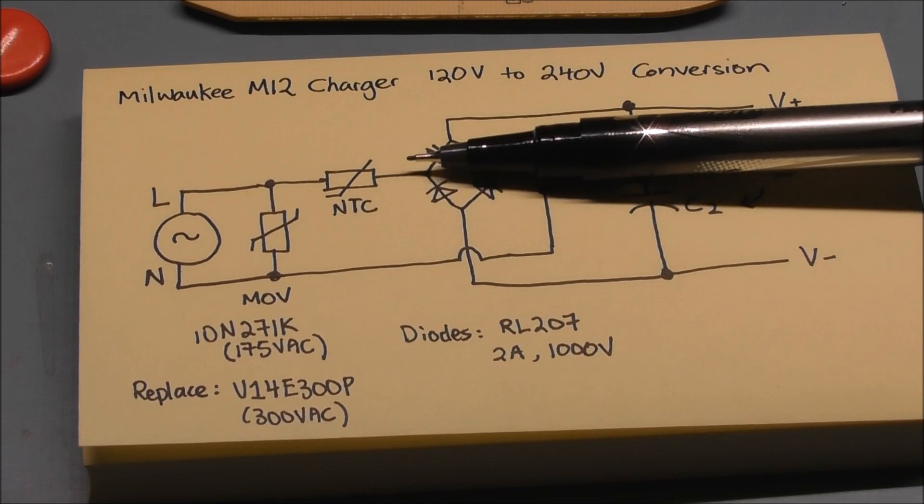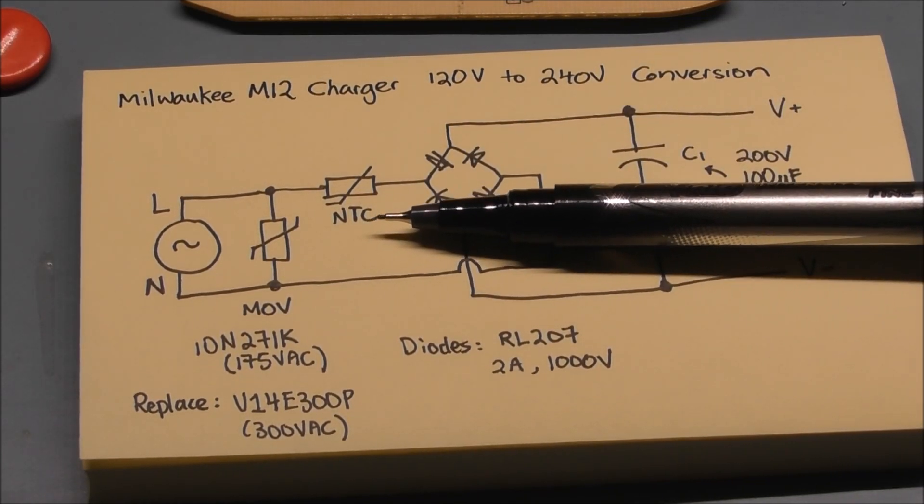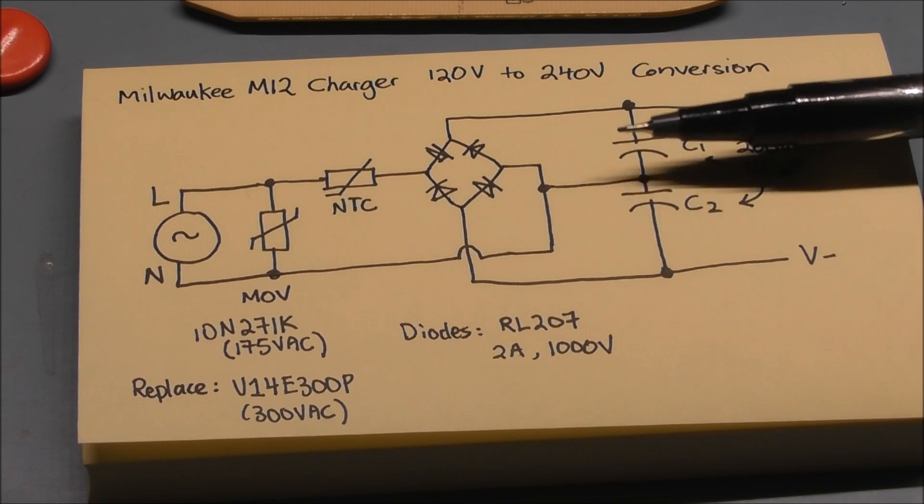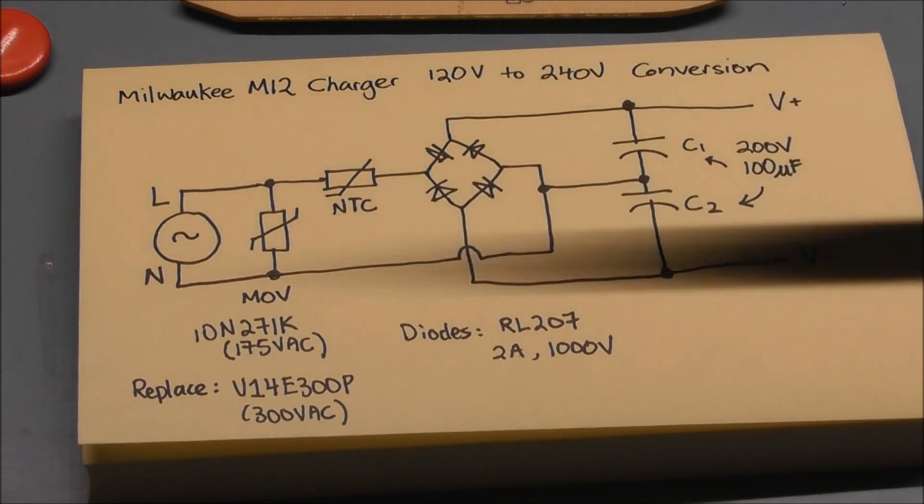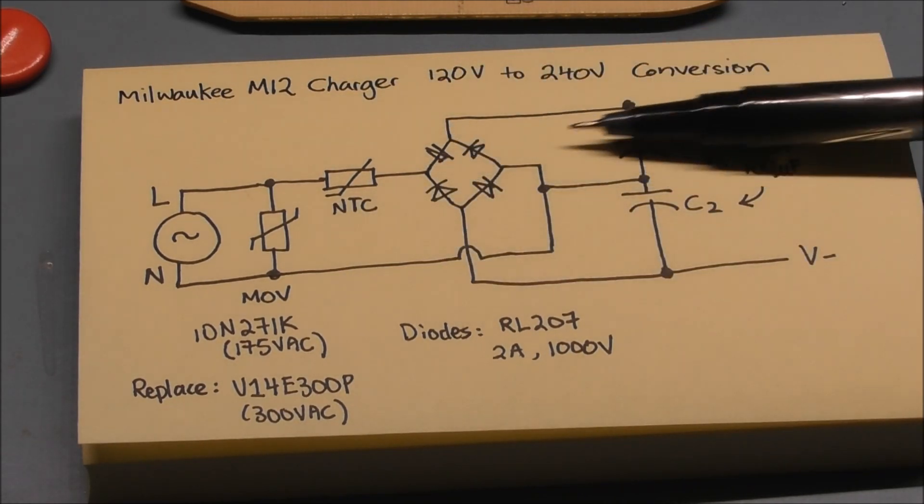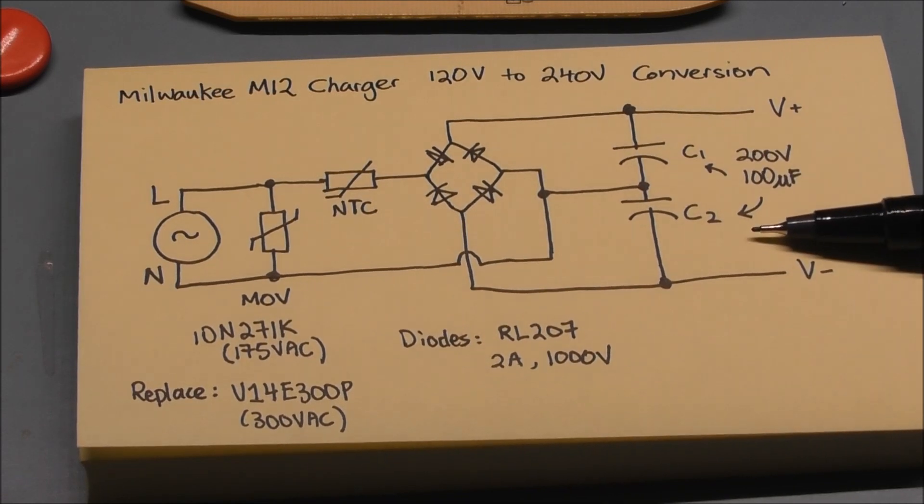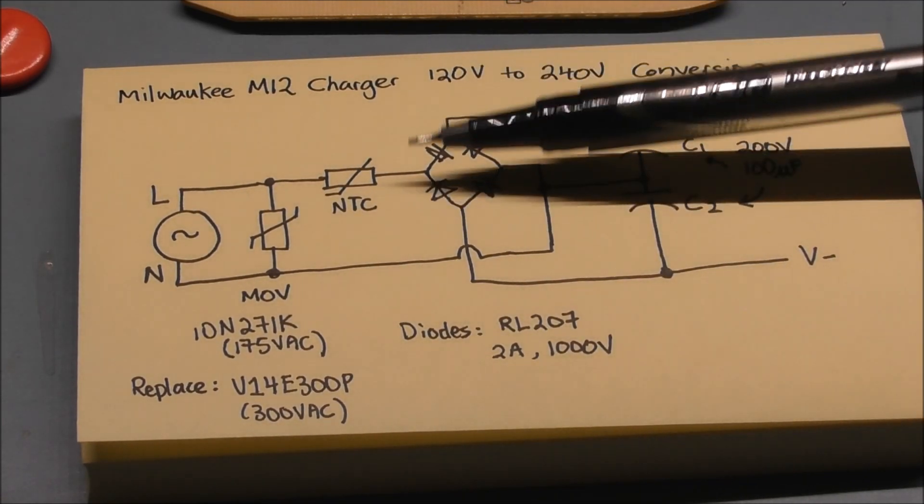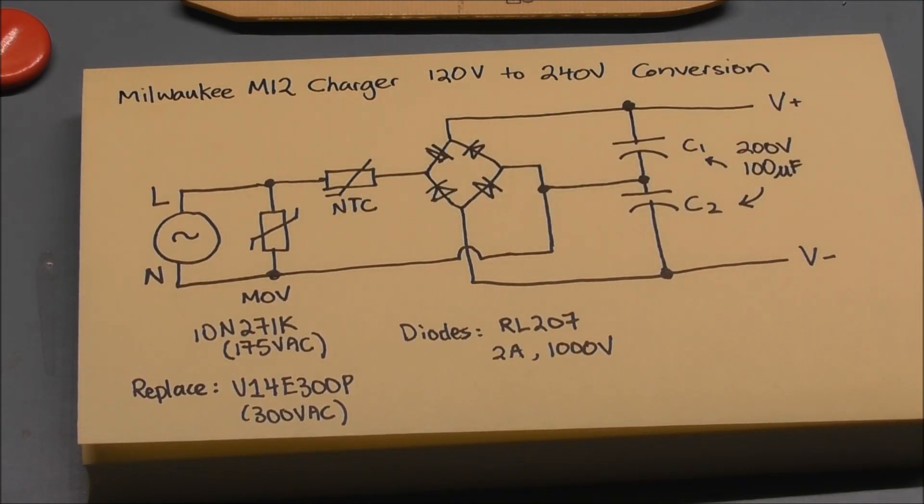So in line on the live line we have the NTC, which is a thermistor and it's a type of resistor whose resistance is dependent on temperature. And what this does is it's used to prevent an inrush surge current when power is first turned on and current is flowing to charge up C1 and C2, which are the main filtering input capacitors. And because this is an NTC, we don't need to change this.